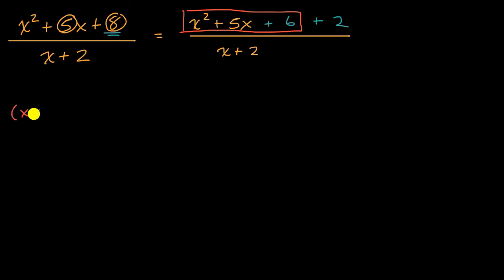That is x plus two times x plus three. x plus two times x plus three. I still have that plus two sitting out there in the numerator. Plus two. And then all of that over x plus two. Or I could write this as being over x plus two, and this being over x plus two. All I did is I said, if I have something plus something else over x plus two, that could be the first something over x plus two plus the second something over x plus two.